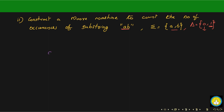Let's start at q0. If I'm seeing b's, I'm not going to count anything so the output is 0. But if I see an 'a', there are chances I'm going to encounter 'ab', so I proceed further and reach q1. At q1 the output is also zero because I have not seen an 'ab' yet.